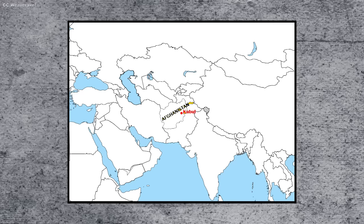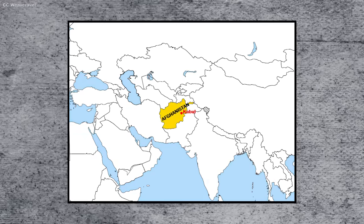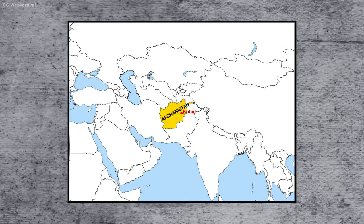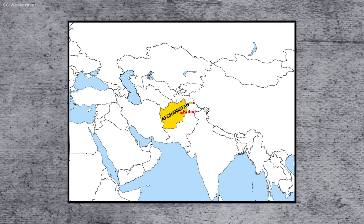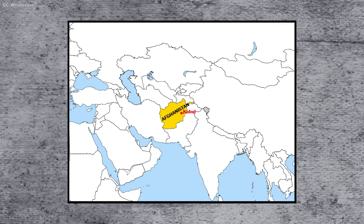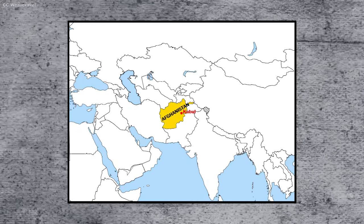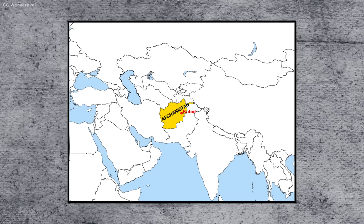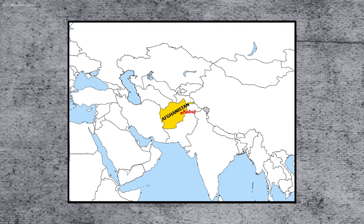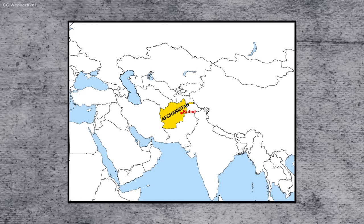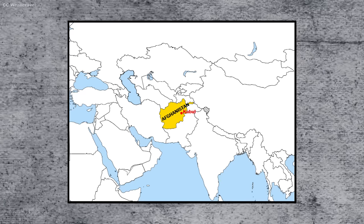Afghanistan is a dry, landlocked, mountainous country located in Central Asia. Its unique location makes it a sort of historical crossroads between neighboring powers from every direction. It has been the location of wars for thousands of years, even being conquered by Alexander the Great well over 2,000 years ago.